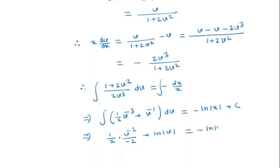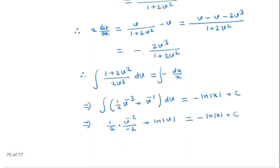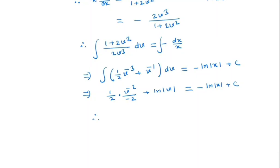Is equal to minus ln x plus c. So we have 1 by 4, now we have v power minus 2. We have v power minus 2 will be x by y whole square. ln v will be ln y by x equal to minus ln x plus c.